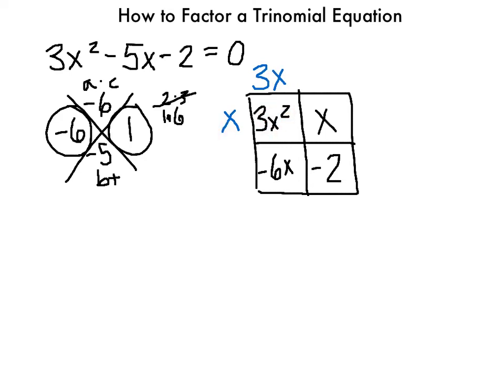Then I think: x times what gives me x? That would be 1, so x times 1 equals x. You can write a 1 in front of the x if you like — it doesn't change anything. Then: 3x times what gives me negative 6x? 3 times negative 2 gives negative 6. Double-checking: 1 times negative 2 gives negative 2, which is correct. So I take what's on the outside of the box as my factored answer.